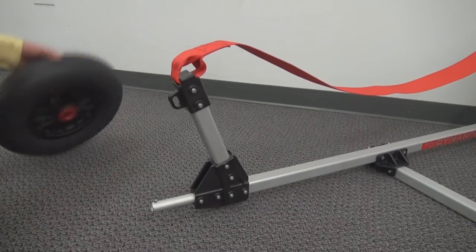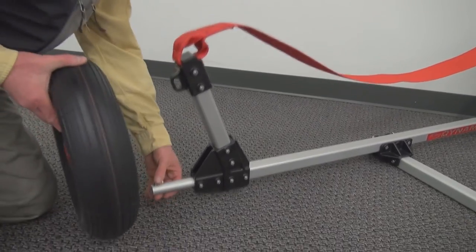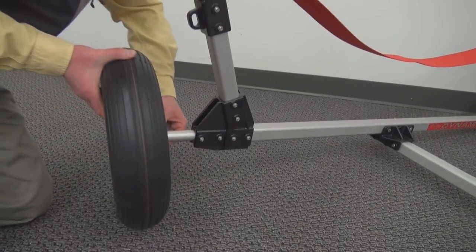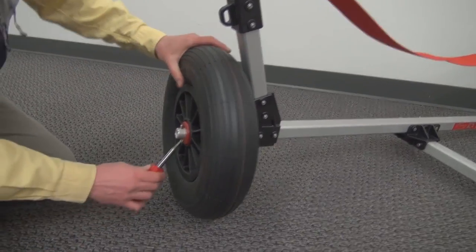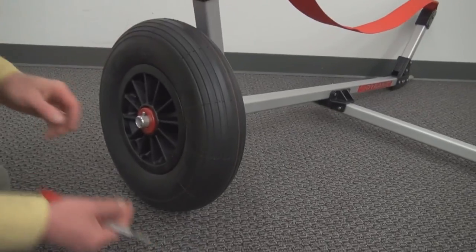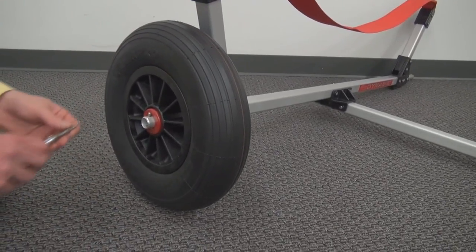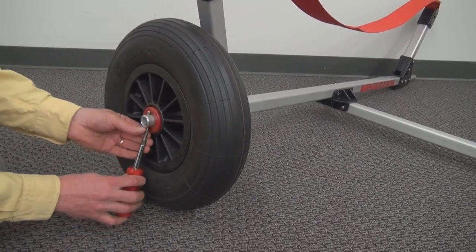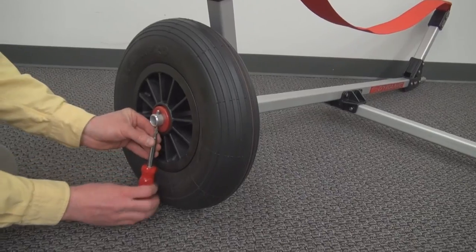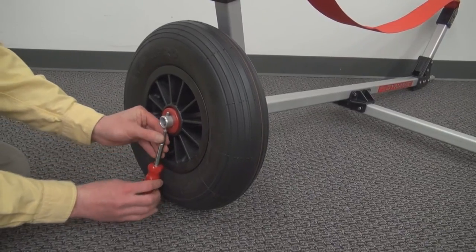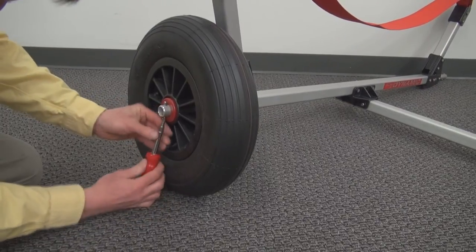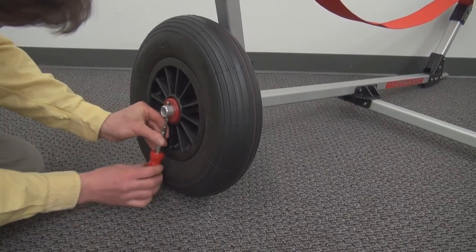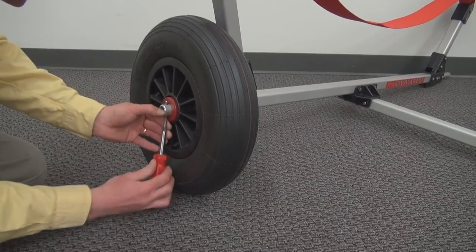So next we're going to put the wheel assembly on. We've got the push button. Push that down. Slide it on. And we've got this, I think it's some kind of a safety screw, but we're going to just screw this up into the other side of that push button and essentially it locks the push button into place.